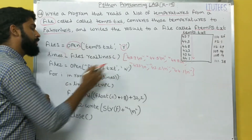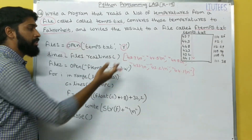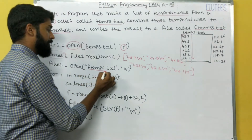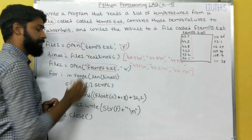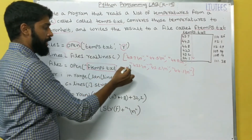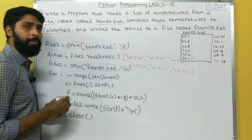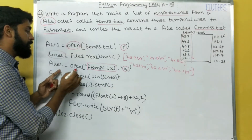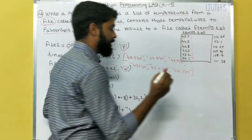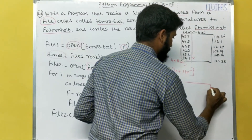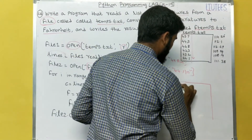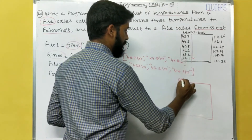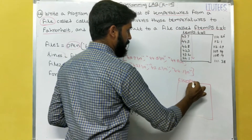Now we are going to convert these temperatures into Fahrenheit and store them in a file. The file name is ftemps.txt. We open it in write mode — 'w' mode means we are going to write data onto the file. So file2 = open('ftemps.txt', 'w'). That means in primary memory a file is created, initially empty, with the name ftemps.txt.